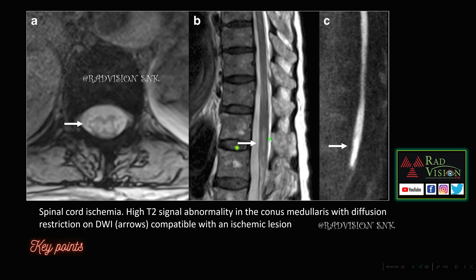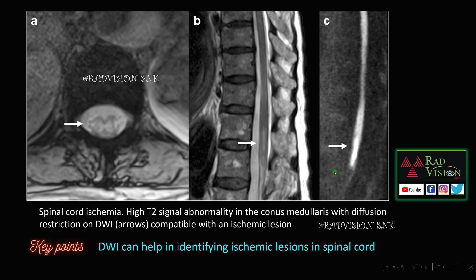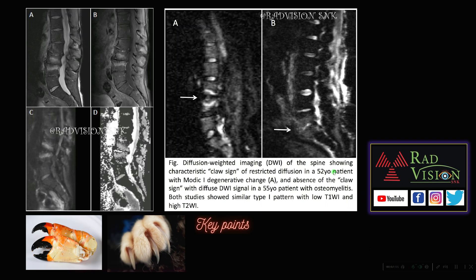Next: this was a case of spinal cord ischemia. You can see hyperintensities in the spinal cord on T2, showing classical restricted diffusion on DWI. DWI helps in identifying ischemic lesions in the spinal cord.